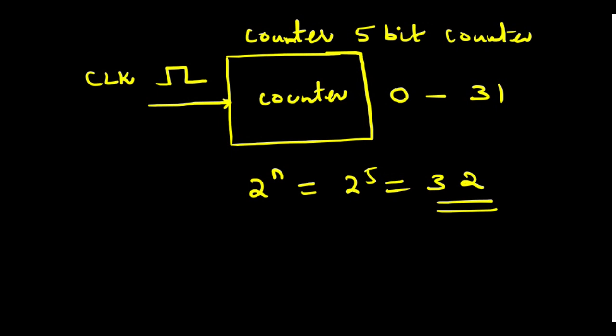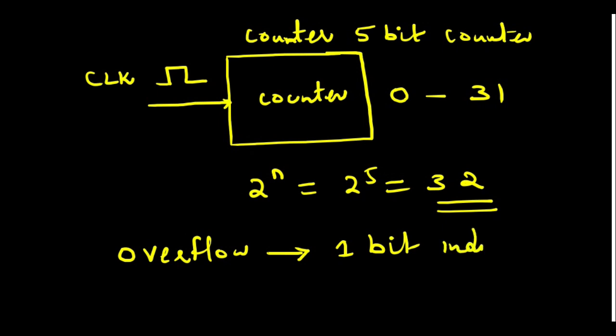After 31, if you give the clock pulse again, it will start from 0, 1, 2, 3, 4 and so on. Once it reaches 31, the next clock pulse brings it back to 0 — that is called overflow. In a microcontroller, there is an overflow bit. When this overflow happens, one bit indication will be set, and we use this to find out whether the timer has overflowed.